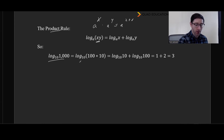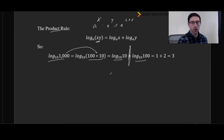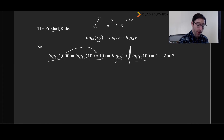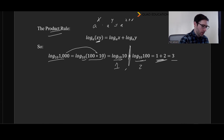Going back to my log base 10 of 1000 example: nobody will argue that 100 times 10 is 1000. So I've split 1000 as 10 times 100, and the product rule says I can split it into log base 10 of 10 plus log base 10 of 100. Log base 10 of 10 asks 10 to what power equals 10 — that's 1, since anything to the power of 1 is itself. And 10 to what power is 100 — that's 2. So 1 plus 2 equals 3. Note that the bases must be the same — you can't split log base 10 into log base 2 and log base 5.